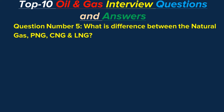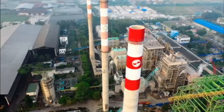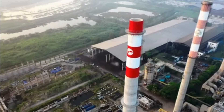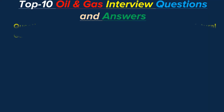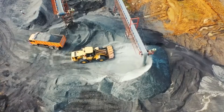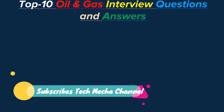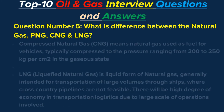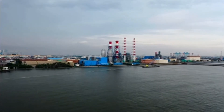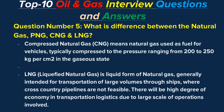Question number five: What is the difference between natural gas, PNG, CNG, and LNG? Answer: Natural gas is a gaseous fuel consisting of 87 to 92 percent methane with a small percentage of other higher hydrocarbons. Piped natural gas (PNG) is generally under atmospheric temperatures but pressure can be as high as 90 kg/cm² in transmission lines and is limited to less than 24 kg/cm² in city gas grids due to the risk of high-pressure gas in crowded cities. Compressed natural gas (CNG) is natural gas used as fuel for vehicles, typically compressed to 200 to 250 kg/cm² in the gaseous state. Liquefied natural gas (LNG) is the liquid form of natural gas, generally intended for transportation of large volumes through ships where cross-country pipelines are not feasible, offering a high degree of economy in transportation logistics.